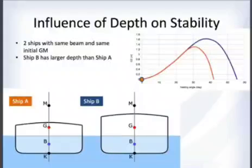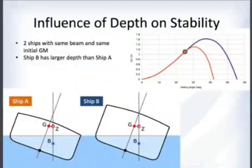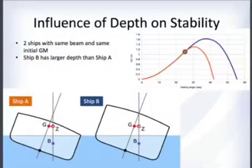Consider two ships, Ship A and Ship B, with the same beam and the same initial GM. Ship B has a larger depth than Ship A.